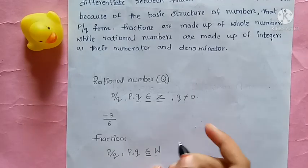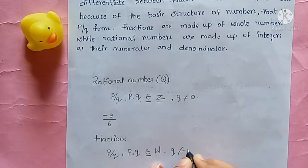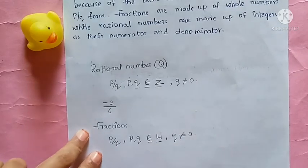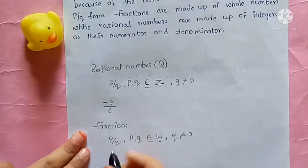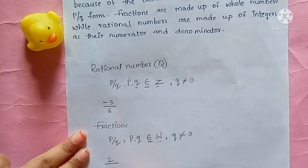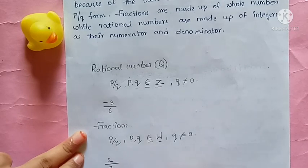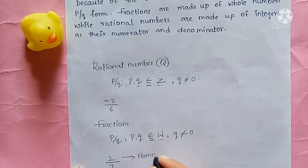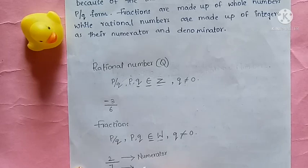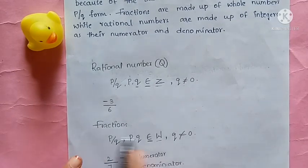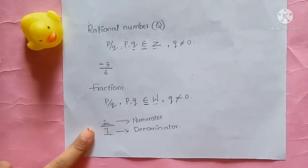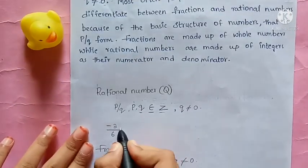Q must not equal 0 for fractions as well. For example, 2/7 is called a fraction because the upper part — the numerator — and the lower part — the denominator — are both whole numbers. In fractions, the numerator and denominator must be all positive numbers. But in rational numbers, they can be negative or positive.